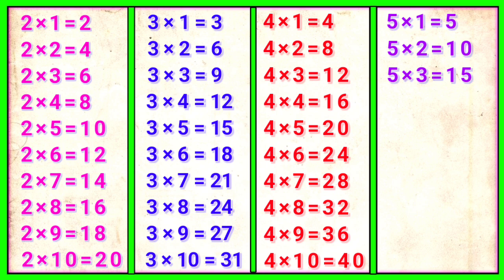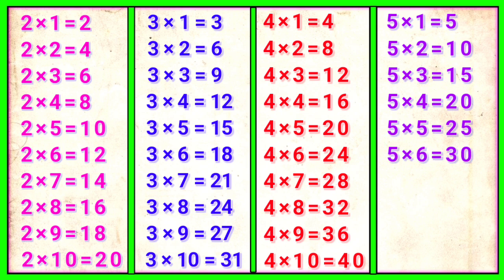5 4s are 20, 5 5s are 25, 5 6s are 30, 5 7s are 35.